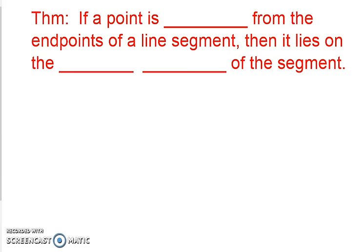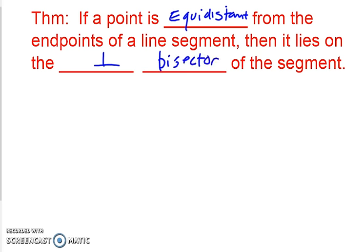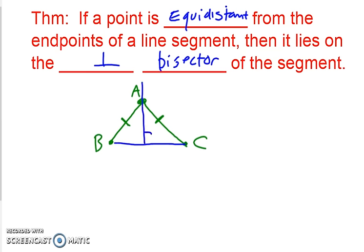First we are going to look at the converse of what you talked about in the previous video. This theorem says: if a point is equidistant from the endpoints of a line segment, then it lies on the perpendicular bisector of the segment. I'll draw a quick picture to make sure we're clear. So if you had a point A and it was equidistant — the same distance from two points B and C — then if you drew the perpendicular bisector to BC, you know that A would lie on that perpendicular bisector.